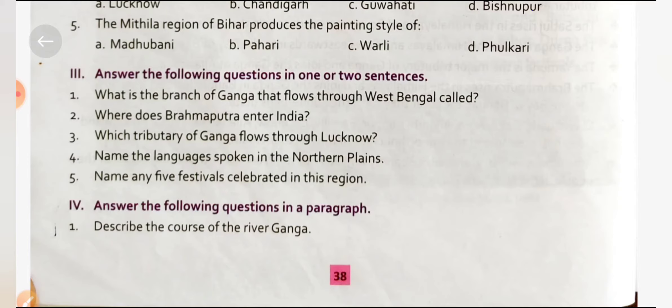Name the languages spoken in the Northern Plains. The Northern Plains extend from Punjab to Assam across various states. The languages spoken are: Punjabi in Punjab, Hindi in Bihar and Uttar Pradesh, Assamese in Assam, and Bengali in West Bengal.